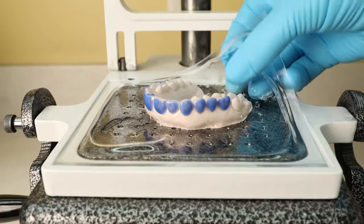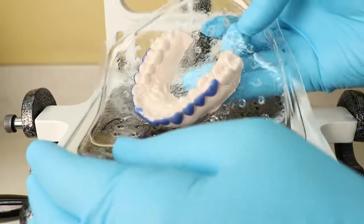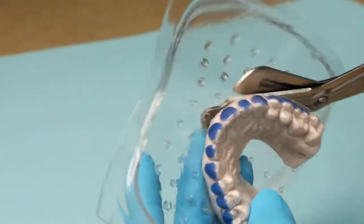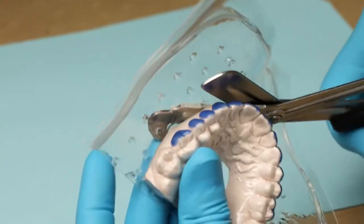To avoid distortion, cool the tray material completely before removing from the model. Cut away the excess material with Ultradent Utility vinyl cutters.